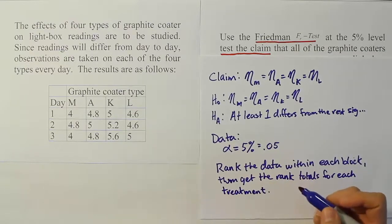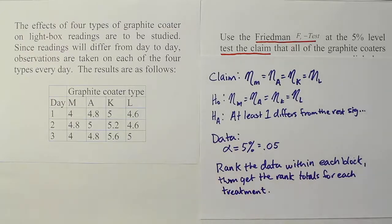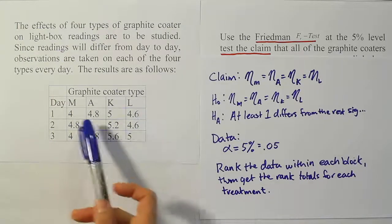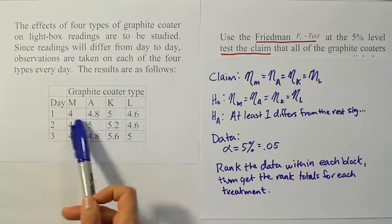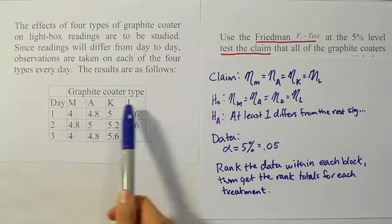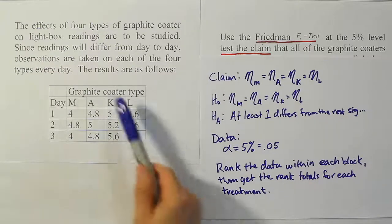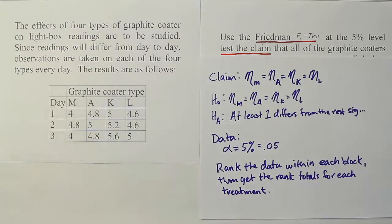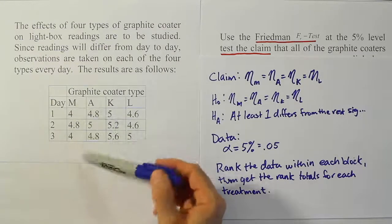So basically the idea here is that we're going to simply rank across the blocks. So we'll only have to give ranks for four numbers at a time. So we'll be ranking them one to four across the blocks. We won't rank the entire set of data as if it was all independent data. Since it's in blocks, we'll just rank in the blocks themselves. And then when we're done, we'll total up the columns.